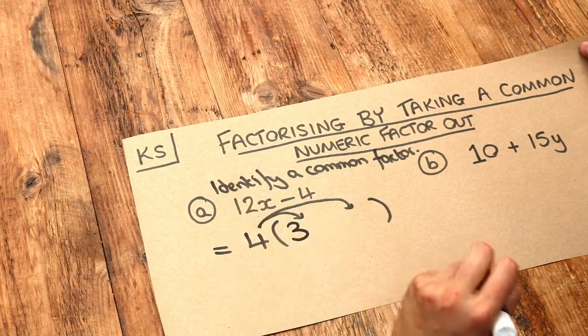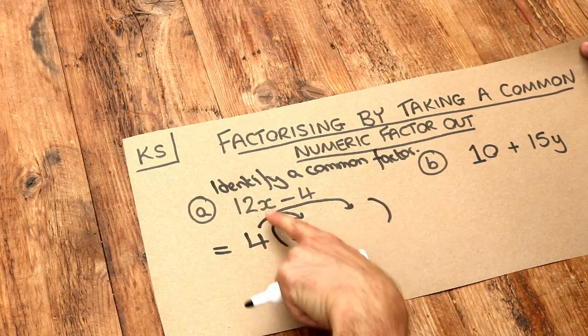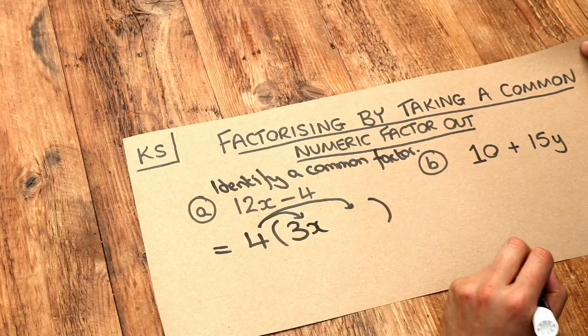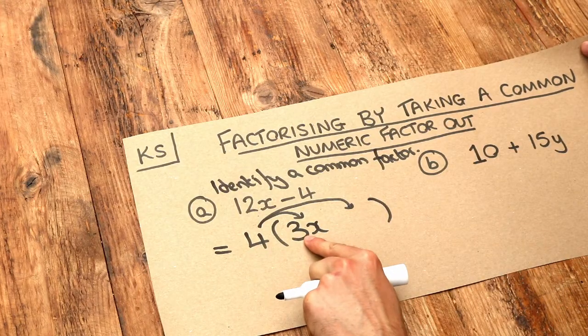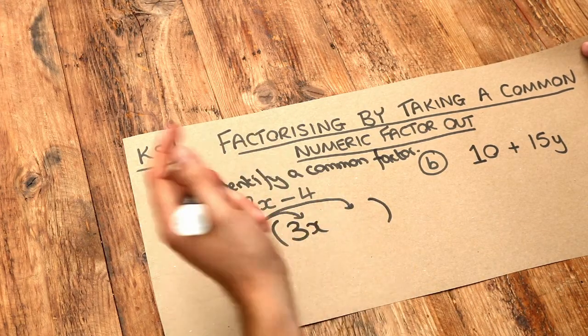Well, we need a 3. 4 times 3 would give you 12. But also this has an x and we need to put an x there. And then that works because 4 times 3x, or 4 lots of 3x, would be 12 lots of x.